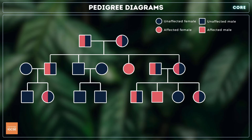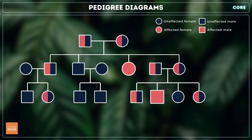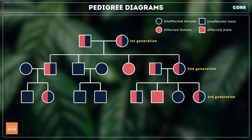A pedigree diagram is a visual representation of the inheritance pattern of a specific trait or characteristic within a family or group of individuals. Individuals who exhibit the trait are represented by filled-in symbols — usually circles for females and squares for males. The diagram typically consists of multiple generations, each represented by a horizontal row, with the oldest generation at the top and subsequent generations placed below. By analysing a pedigree diagram, you can identify the inheritance pattern of the characteristic.